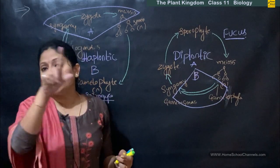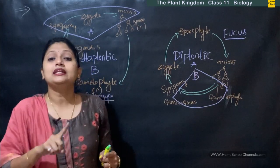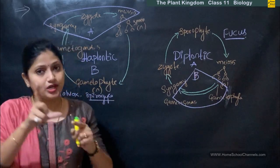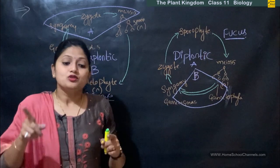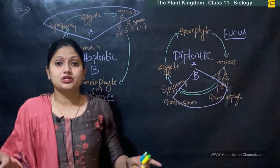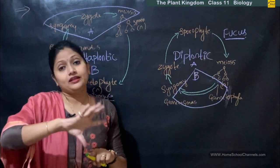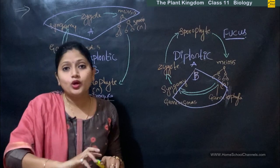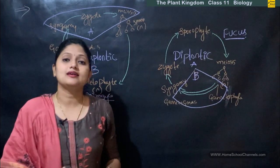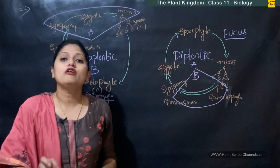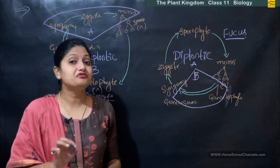In a complete life cycle, plants alternate themselves from a diploid stage to a haploid stage and haploid stage to diploid stage. This alternation from diploid to haploid and haploid to diploid in the same life cycle is called the alternation of generations.